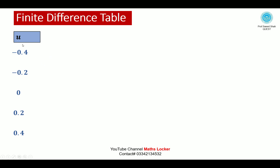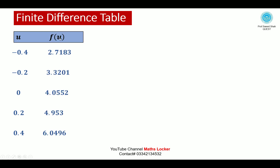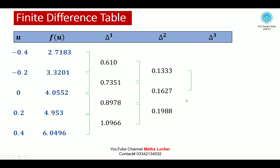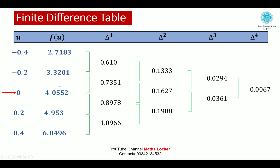Building the finite difference table: writing the first column with u values and the second column with all f(u) values. Taking the first differences: 3.3201−2.7183, 4.0552−3.3201, 4.953−4.0552, 6.0496−4.953. Similarly taking the second, third, and fourth differences. The center value is marked, and the corresponding f(u) value at center is 4.0552. Draw the diagonals.